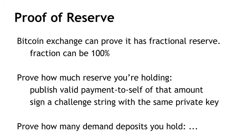The first piece proves how much reserve you have. The second piece is to prove how many demand deposits the group holds. One more thing to note: in proving how much reserve you're holding, you could under-claim. The organization might have 150,000 Bitcoins but choose to make a payment-to-self of only 100,000 — so this proof doesn't prove that's all you have, but it proves you have at least that much. Now how do you prove how many demand deposits you hold? For that, we're going to use a trick that relates to the Merkle trees discussed in lecture one.